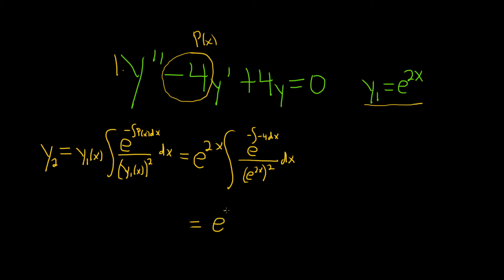This is equal to e to the 2x times the integral. This is just going to be a positive 4, and so when you integrate it you just get 4x. Oh, this is nice, look at this. Over and then here, properties of exponents, e to the 4x dx.